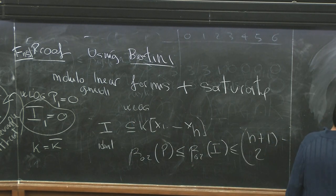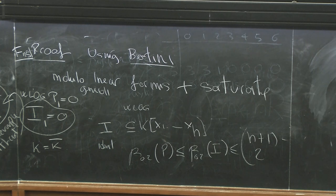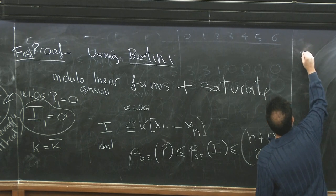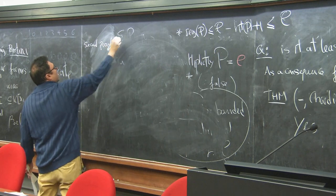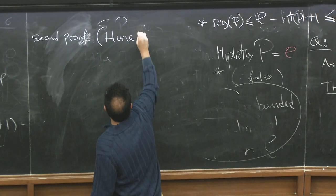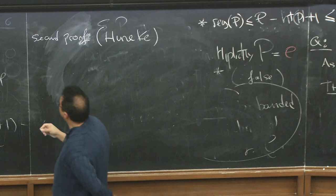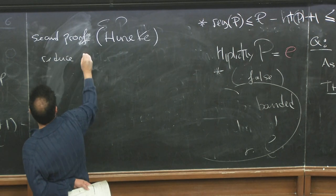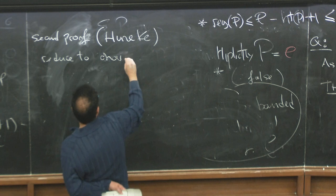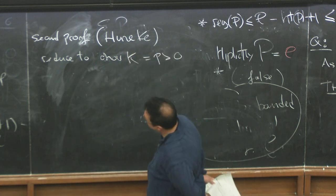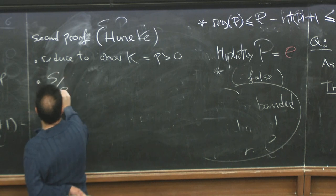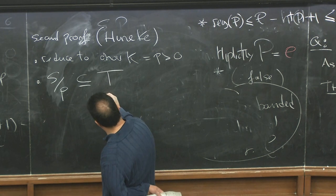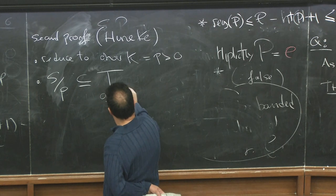What's surprising is basically the second proof is about characteristic p methods. This is due to Craig. Basically what you do, you reduce to characteristic positive. Then you take your S mod P, this is inside the tight closure.